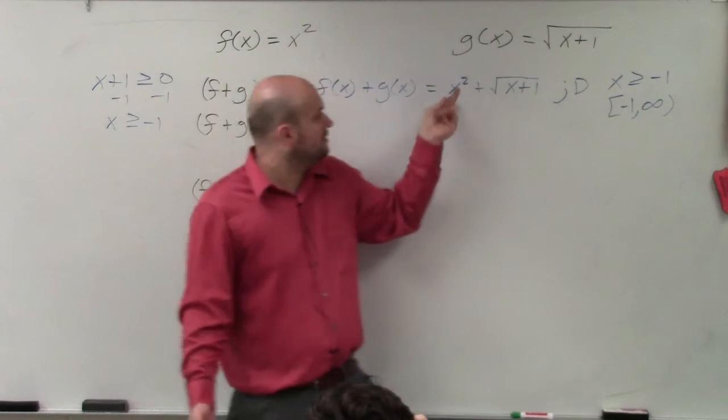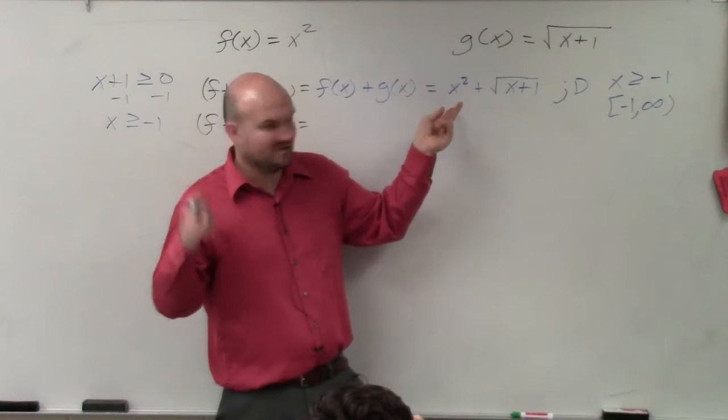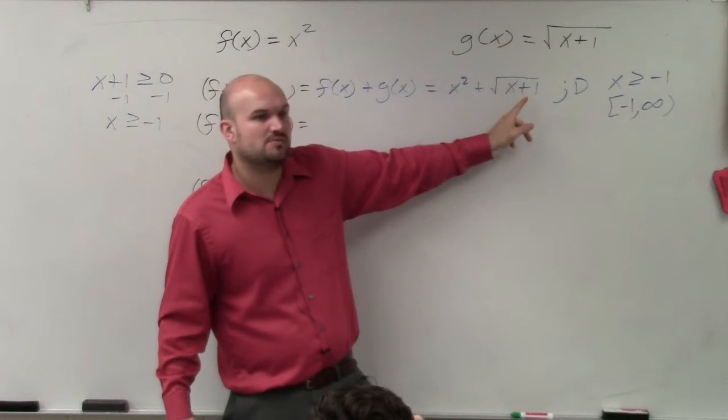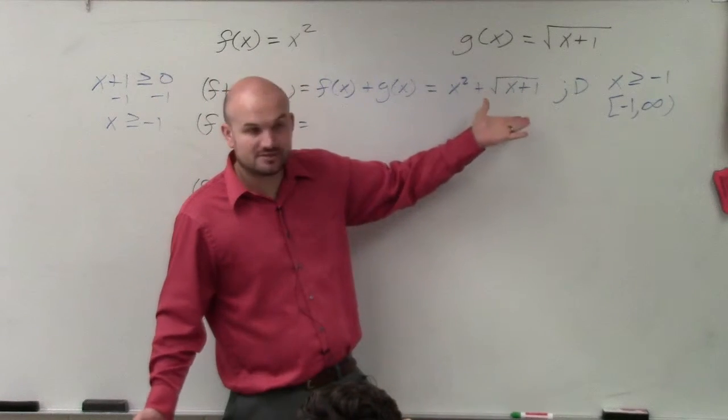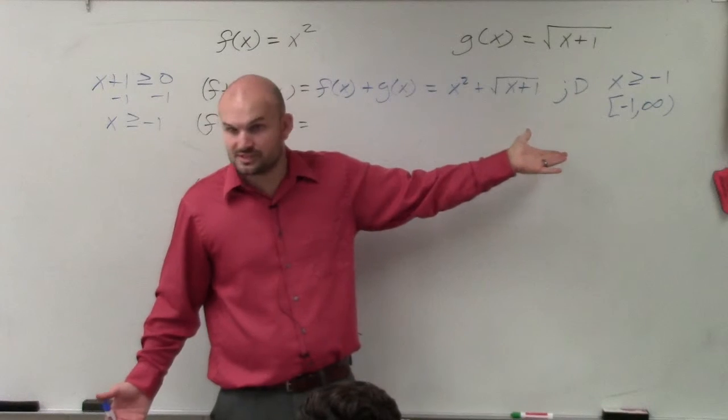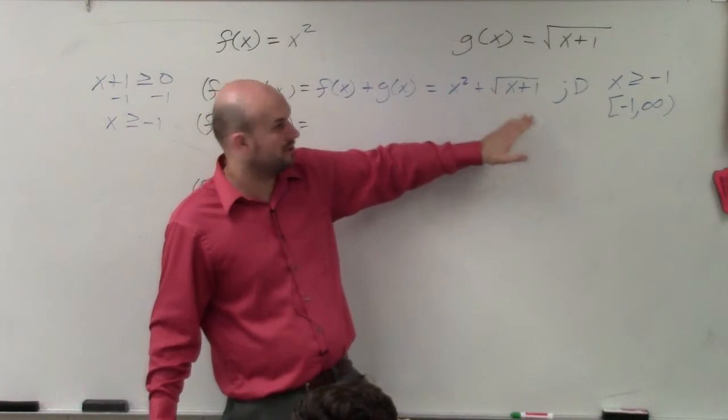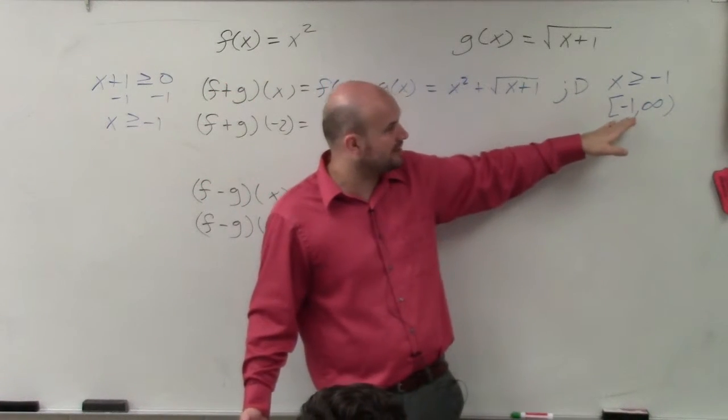Let's do negative 2. Negative 2 squared is 4. Perfect. Negative 2 plus 1 is what? Negative 1. Can you take the square root of negative 1? Not in the real number system, you can't. So that would not work. So that's why it has to be all numbers greater than negative 1.